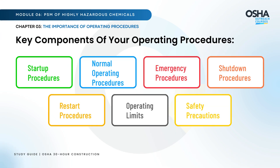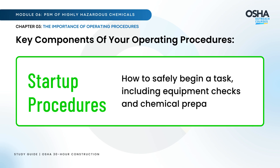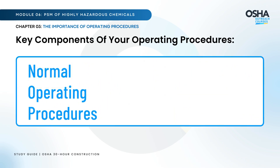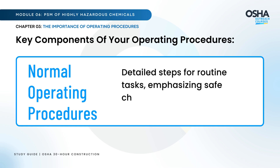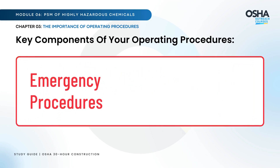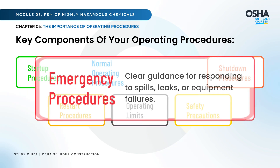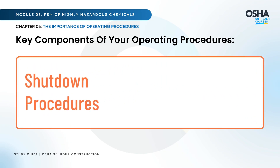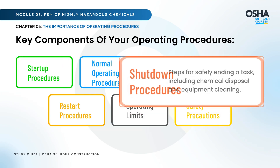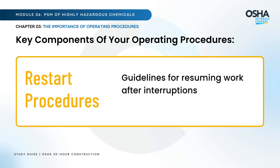Key components of your operating procedures include: Startup procedures — how to safely begin a task, including equipment checks and chemical preparation. Normal operating procedures — detailed steps for routine tasks, emphasizing safe chemical handling and equipment operation. Emergency procedures — clear guidance for responding to spills, leaks, or equipment failures. Shutdown procedures — steps for safely ending a task, including chemical disposal and equipment cleaning. Restart procedures — guidelines for resuming work after interruptions, focusing on safety checks.